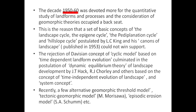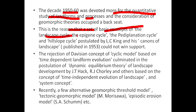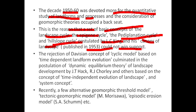The decades of 1950 and 1960 were devoted to more quantitative study of landforms and processes. A set of basic concepts including landscape cycle, epigene cycle, pediplanation cycle, and hill slope cycle were postulated by L.C. King in his Canons of Landscape, published in 1953, but could not win sufficient support.